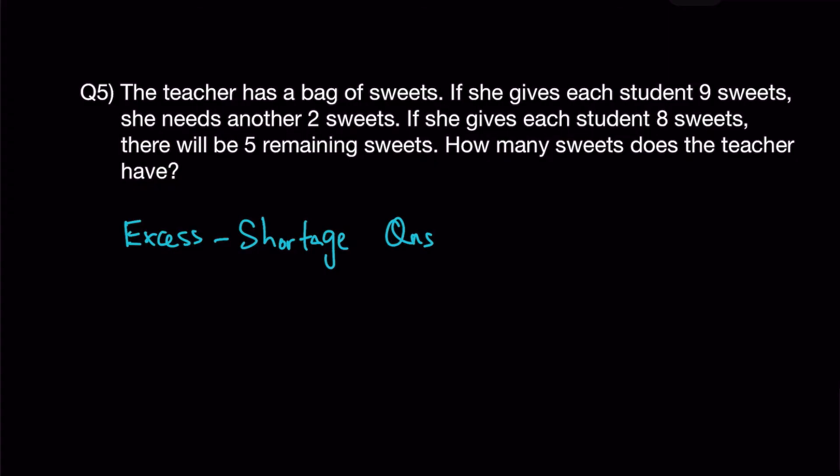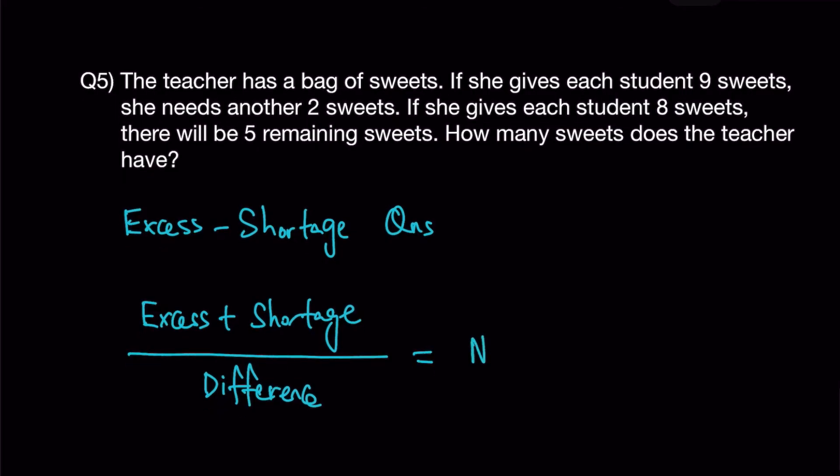There is a way to answer this kind of question for excess shortage. Firstly, you need to identify where is the excess and where is the shortage. You will realize that there are two scenarios in the question. But take note that because this question has an if statement, which is a conditional statement, the process of giving the sweets does not actually happen. So when the question asks how many sweets does the teacher have, they are asking for the initial number which is in the bag of sweets. What you can do is follow excess plus shortage divided by difference, and that will give you the number of students.